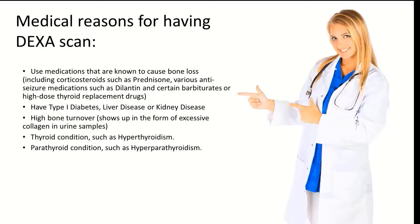Technical reasons for having DEXA scans include using medications known to cause bone loss, including corticosteroids such as prednisone, various anti-seizure medications such as Dilantin and certain barbiturates, or high-dose thyroid replacement drugs. You also need a DEXA scan if you have type 1 diabetes, liver disease, or kidney disease. If lab tests show a lot of collagen in your urine, this is an indication of high bone turnover and a DEXA scan is warranted. Thyroid conditions such as hyperthyroidism or parathyroid conditions such as hyperparathyroidism are also indications for a DEXA scan.